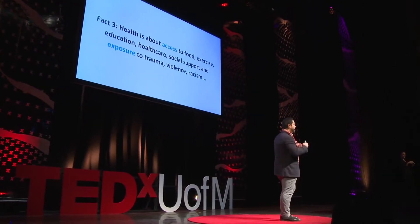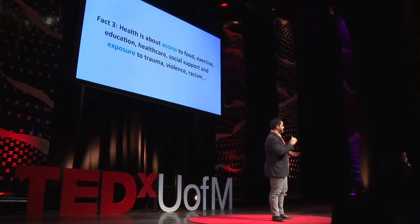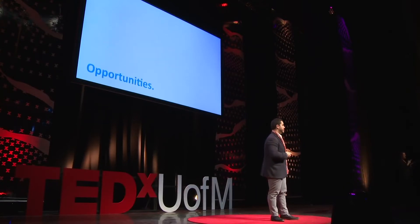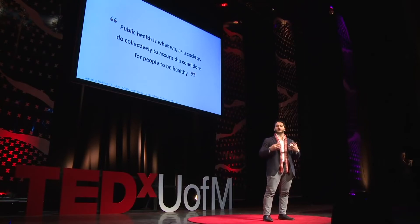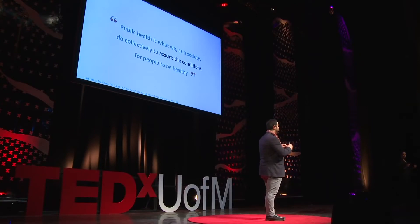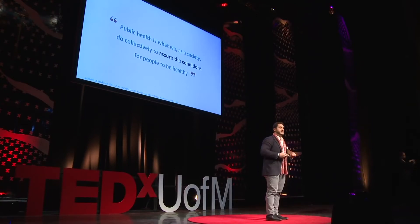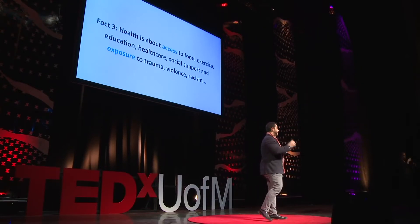Which gets us to the third fact: health is about access — access to food, exercise, education, healthcare, and social support, and about exposure to things like trauma, violence, and racism. But there are opportunities. Public health is what we as a society do collectively to assure the conditions within which people can be healthy. The first opportunity is to invest in public health, thinking about access to food, exercise, education, healthcare, and social support, and exposure to trauma, violence, and racism.